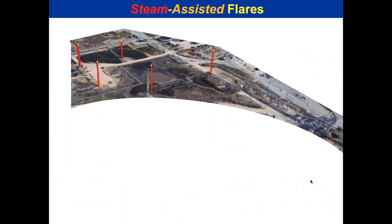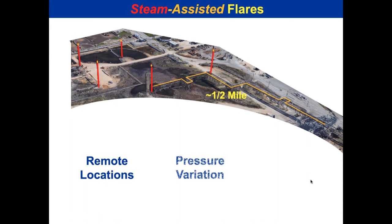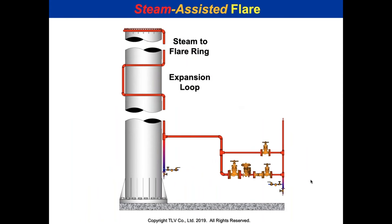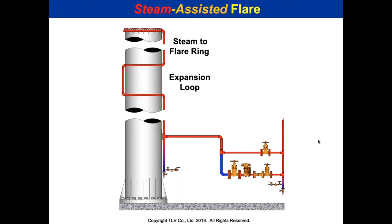You can look at flare systems on Google Earth — they can be a half mile walk out or more. Remote locations have pressure variations from flaring to non-flaring and load variations. Looking at a graphic: you see the flare tower, the steam line going up, and the control valve station. The problem is the bypass line — when bypassing, steam flows fine, but condensate builds up in the control valve line with no trap to drain it. When the control valve opens, you send a slug right up to the tip. The simple fix is a trap station there.